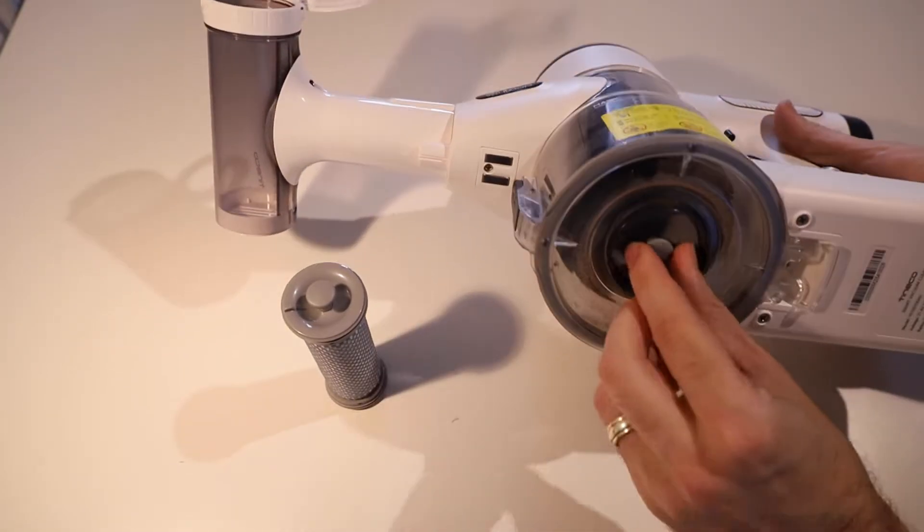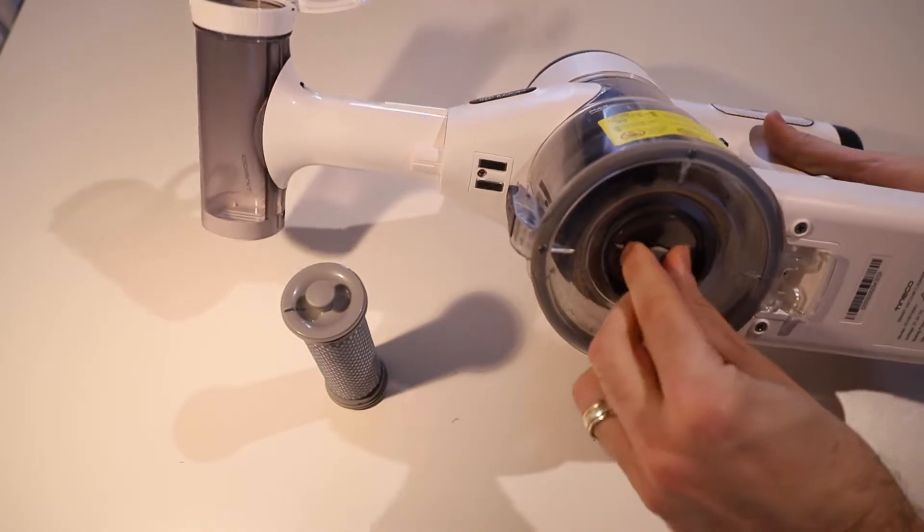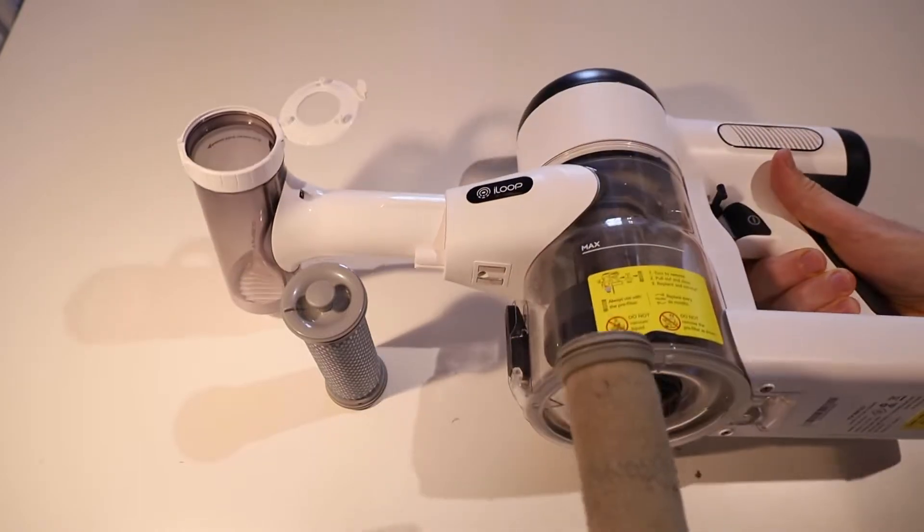So what we want to do is simply pull out the one that's in the vacuum. So we'll just pull that to release it. That'll come straight out.